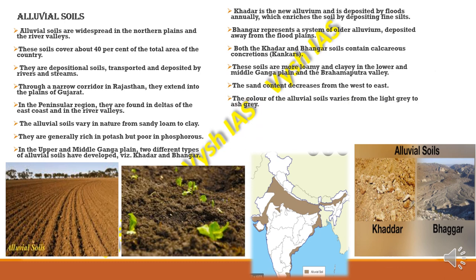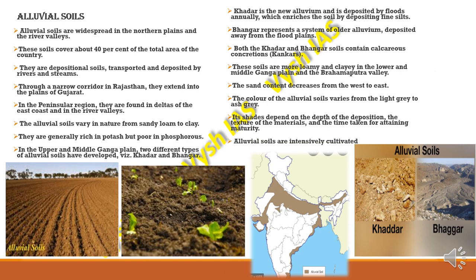The colour of alluvial soils ranges from light grey to ash grey. The shades of these colours mainly depend on the deposition, the texture of the material, and the time it takes to attain maturity. These alluvial soils are intensely cultivated.